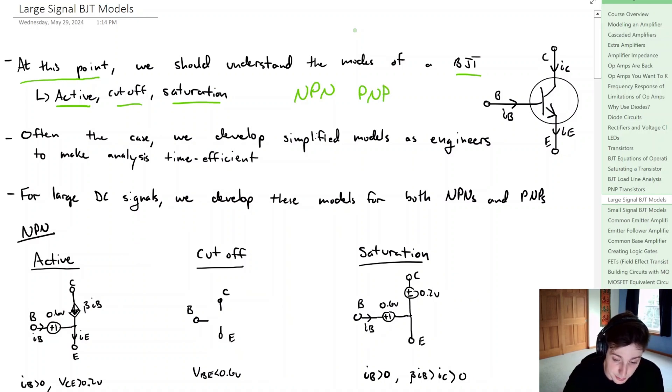Often the case we develop simplified models as engineers. Why do we do this? Well, it's to make the analysis time efficient and easy. So for DC signals that are quite large we develop these models for both the NPN and the PNP transistors.